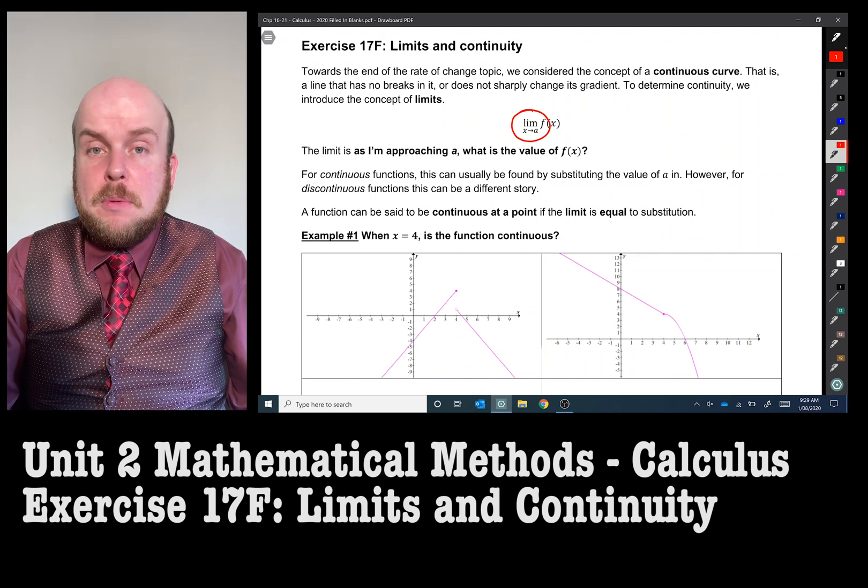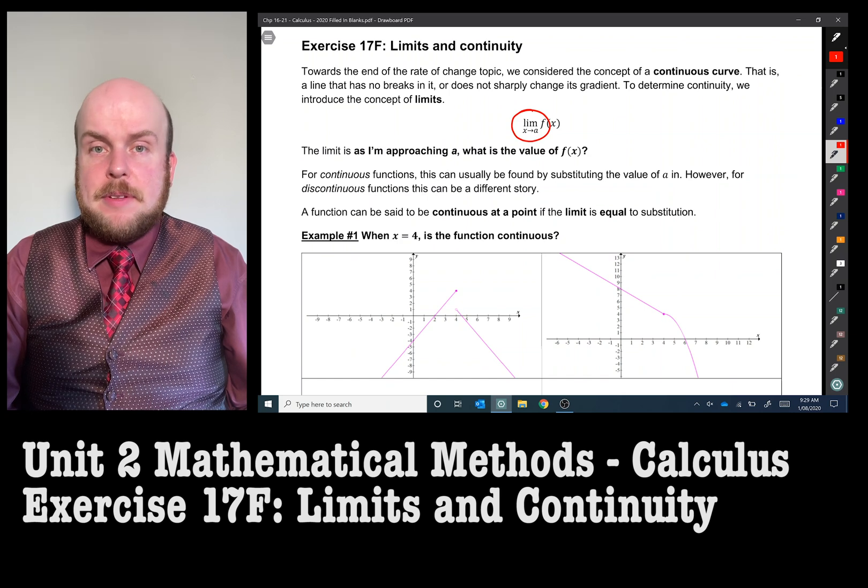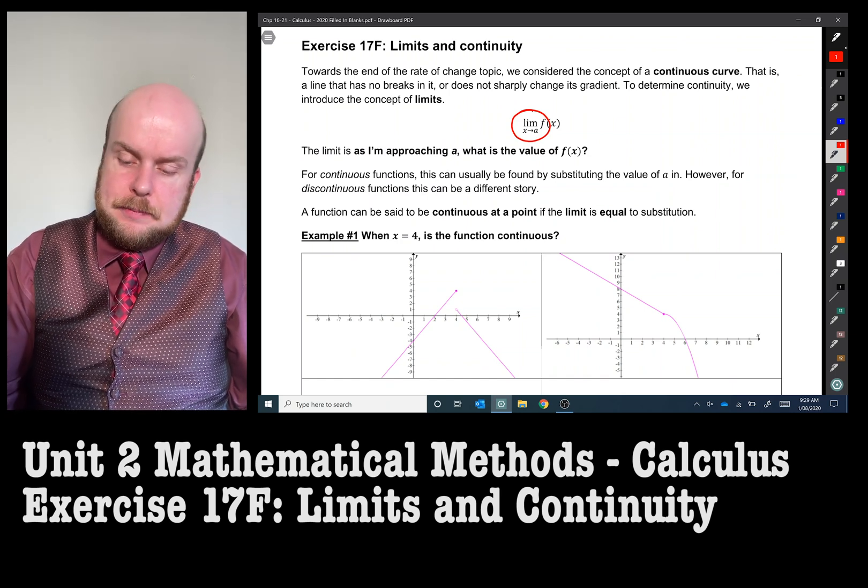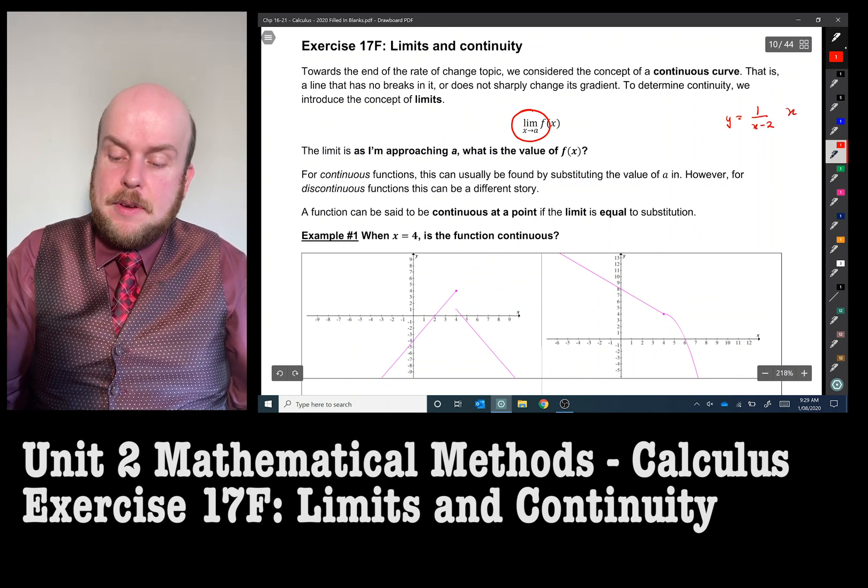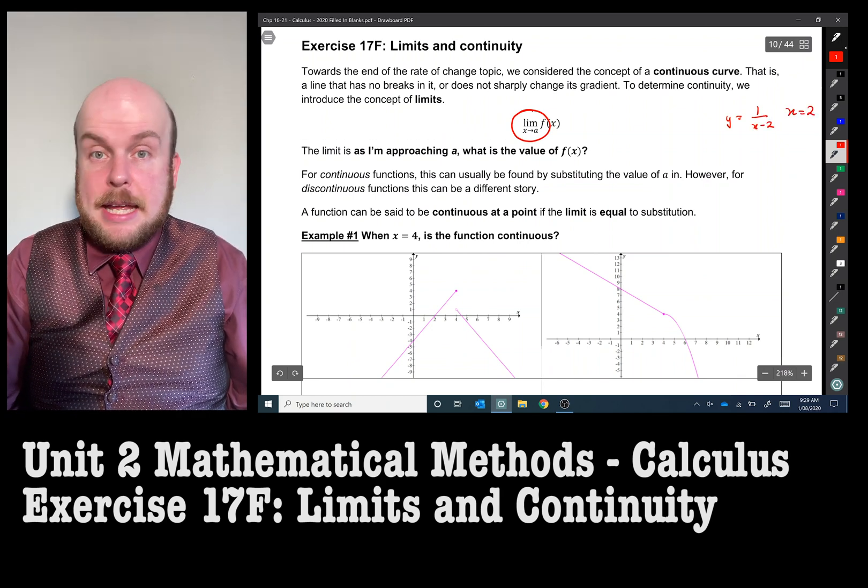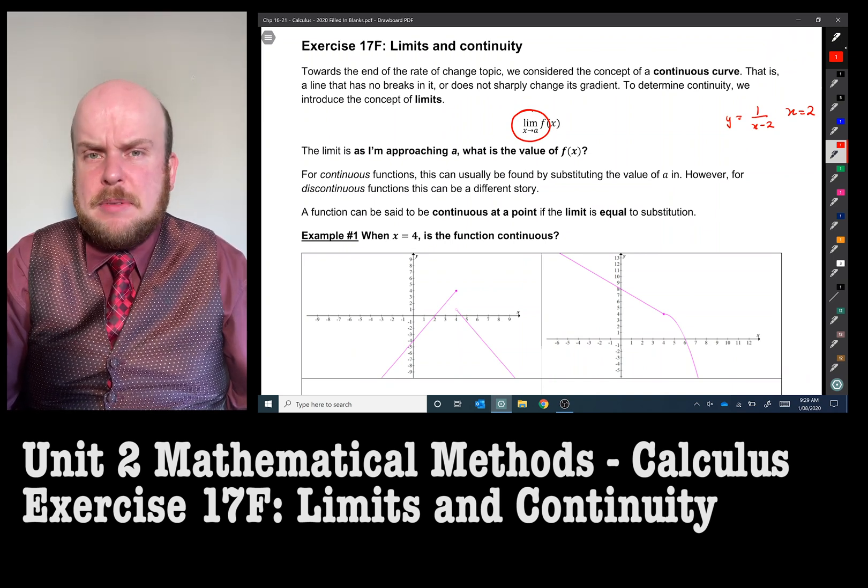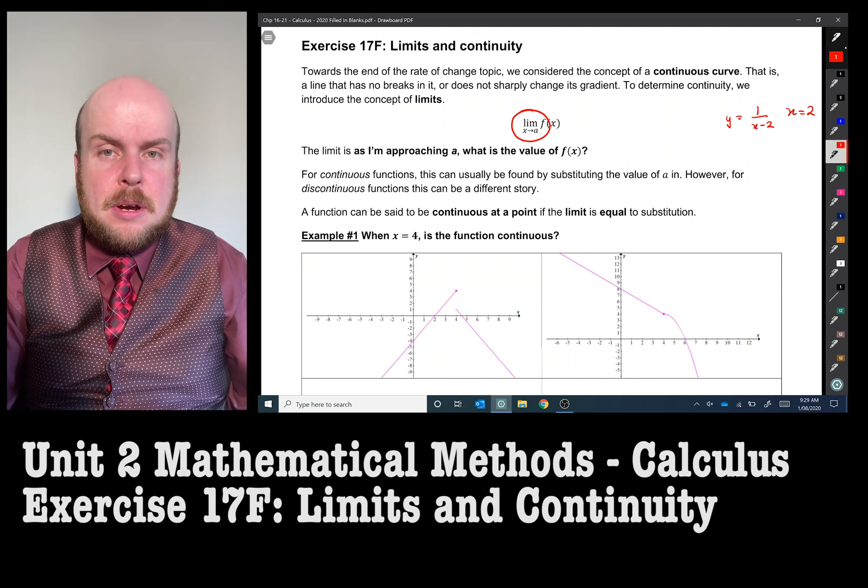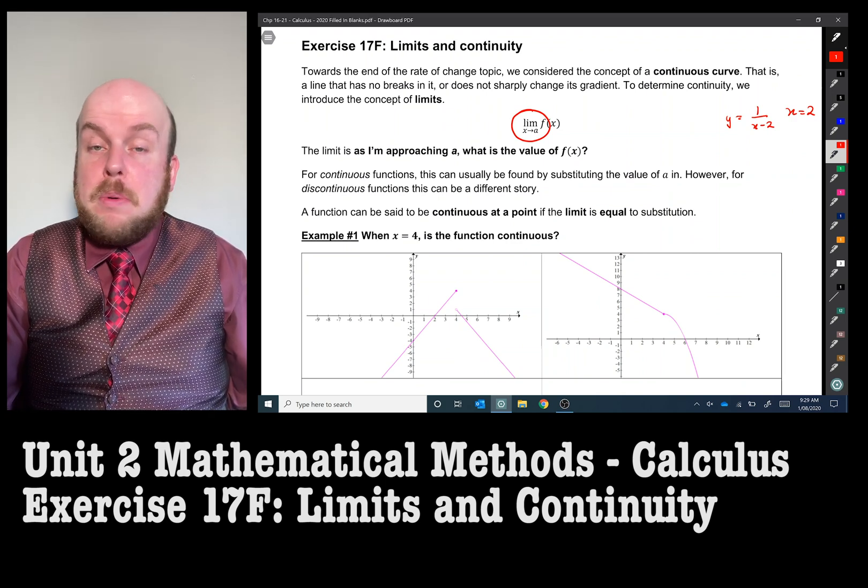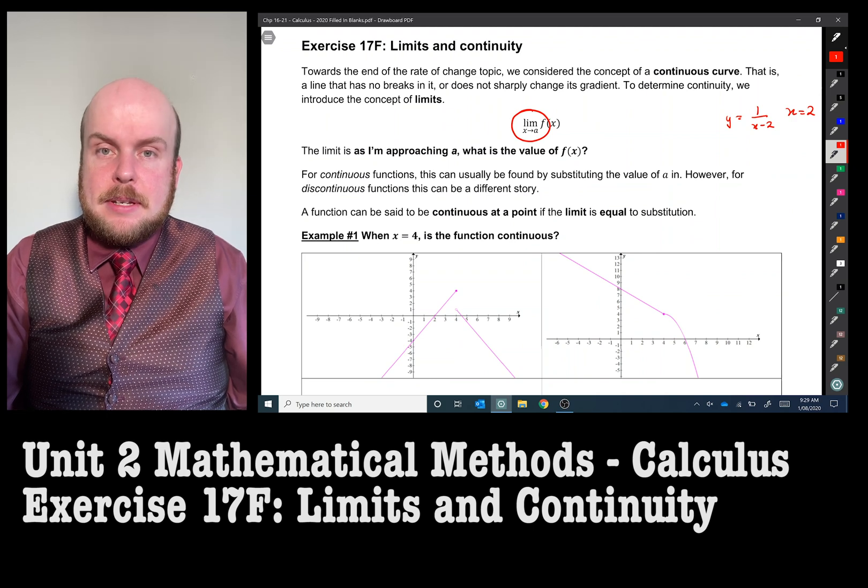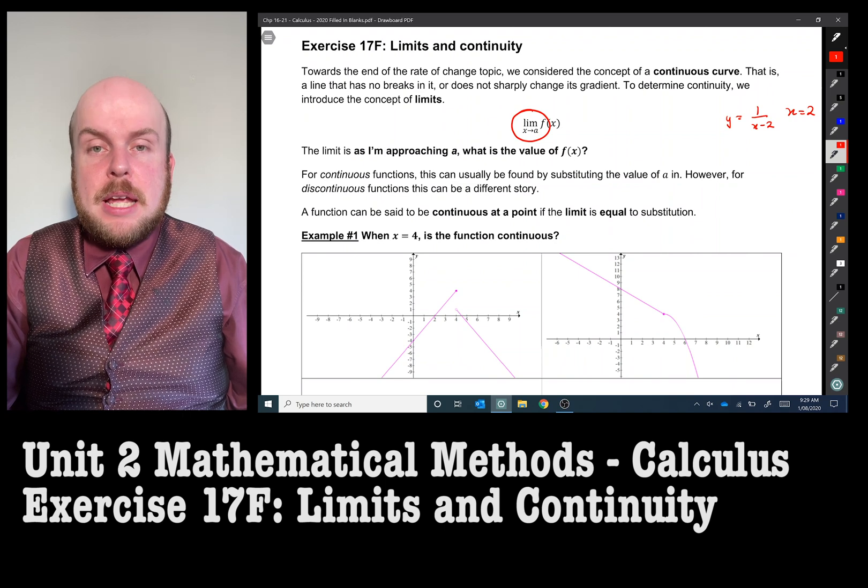For example, when we have dealt with hyperbolas that have vertical asymptotes, if we had 1 over x minus 2, there is a vertical asymptote at x equals 2. We've often said when x equals 2 the value is infinity or something along those lines. Well actually no, the value of x doesn't exist, but what we can say is that the limit as x approaches 2 is that it is approaching infinity.